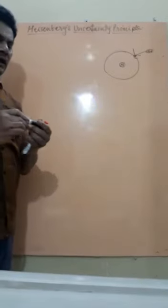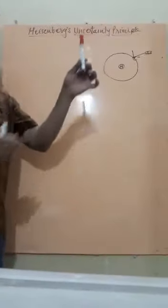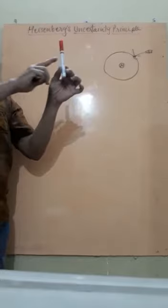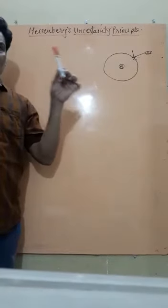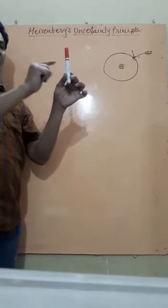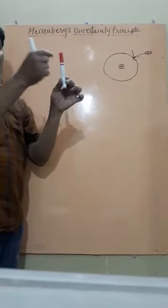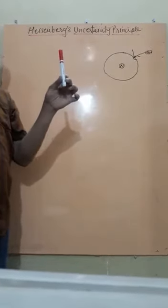Like students, why you are able to see the pen? It is because the light is falling on it, and due to reflection, you are able to observe it.